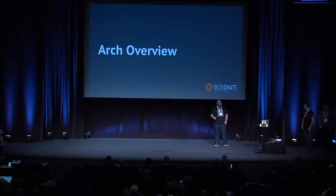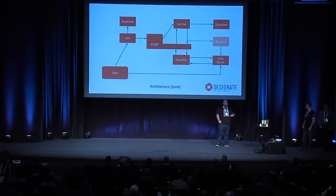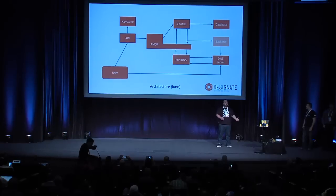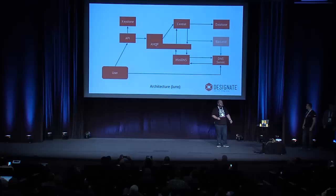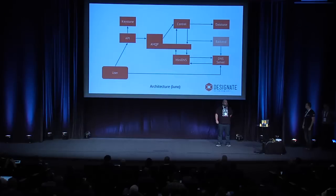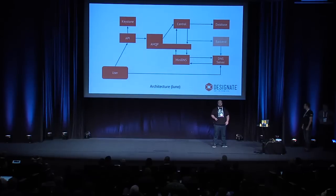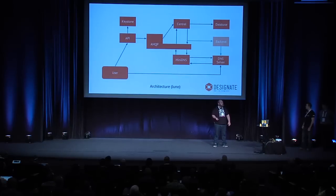This is the current overview of the architecture within Designate. We have a fairly simple architecture: an API service that takes input from the user, validates it, makes sure they're authenticated via Keystone, and passes it over an AMQP queue into Central. Central is where we have all our business logic — it creates the record, makes sure it's a valid domain you have access to, and stores it to a database. It then tells MiniDNS, a micro DNS server that talks to the main DNS servers your customers use, using traditional DNS zone transfer to get information from the Designate database onto the presentation DNS servers. This will be changing in the next cycle, which Vinod will cover.